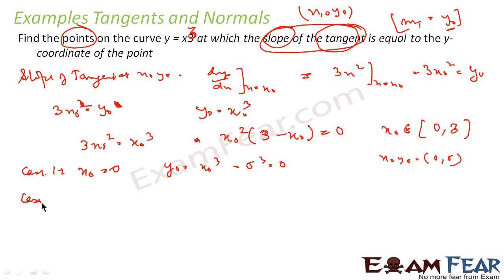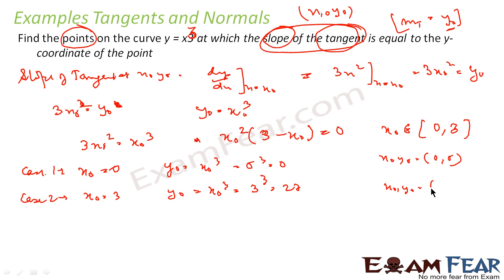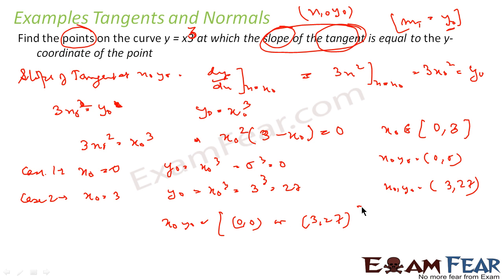In case 2, x₀ = 3, so y₀ = 3³ = 27, giving the point (3, 27). So I have two possible sets of points: (0, 0) and (3, 27). At both these points, the slope of the tangent equals y₀, that is, the y-coordinate of the point.